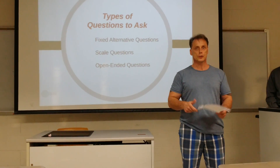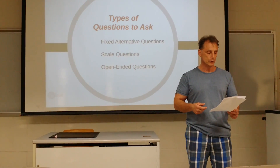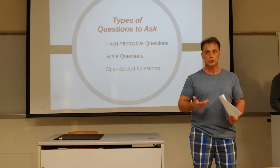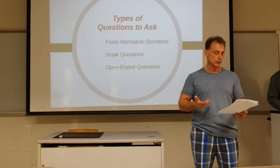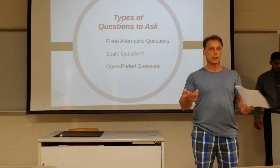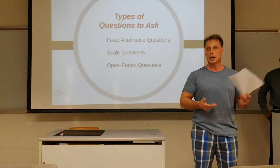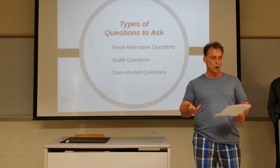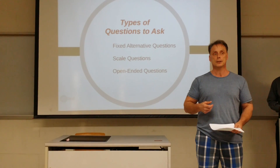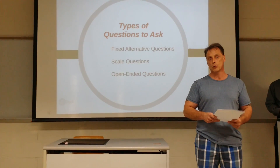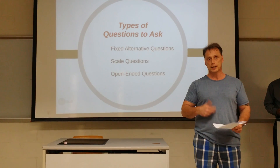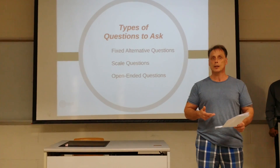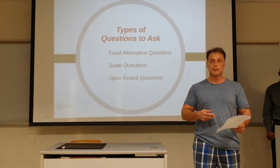There are three different types of questions you can ask your audience to get more information. The first is called a fixed alternative question — for instance, yes, no, or not sure as the possible answers. Next are scale questions; for instance, on a scale of 1 to 10, how do you feel about a particular topic? And finally, there are open-ended questions — for example, how do you feel about corporal punishment in school, without a yes, no, or scale.